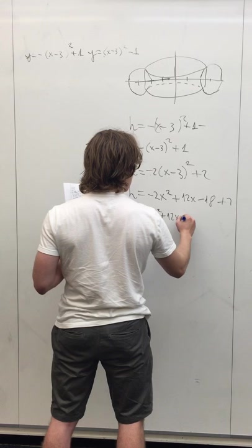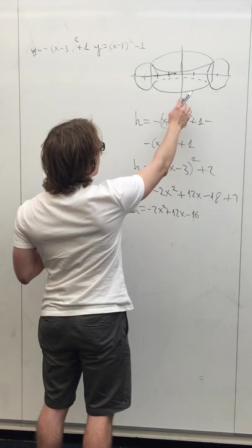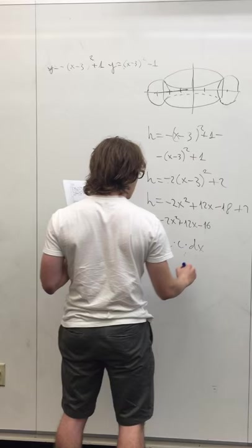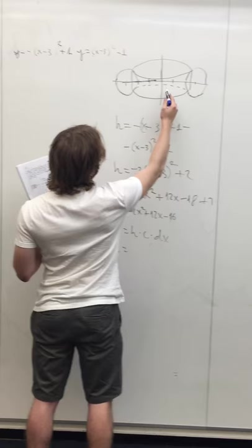So this is our height, and the volume of one shell equals the height times the circumference times dx, which is the depth. And the circumference is just the radius times 2 pi, and the radius is just x, so the circumference is 2 pi x.